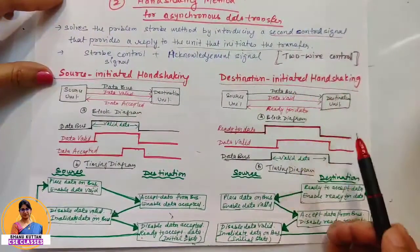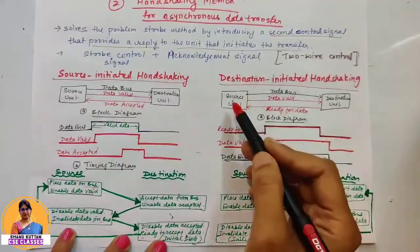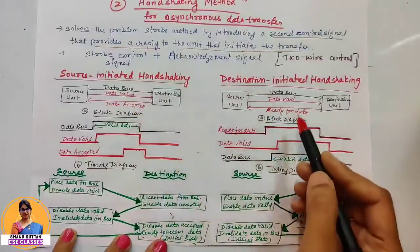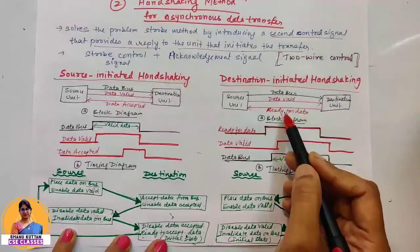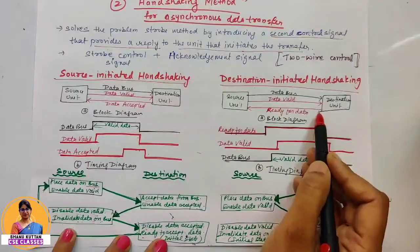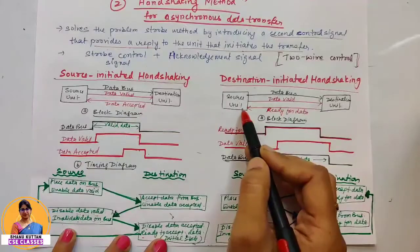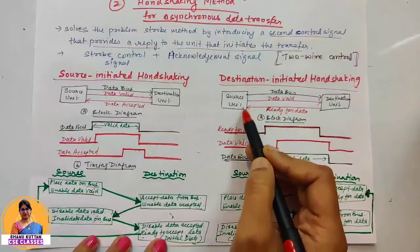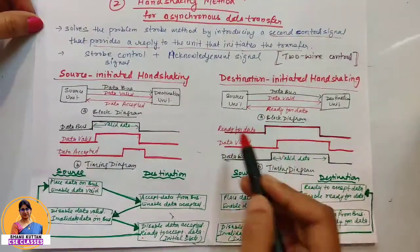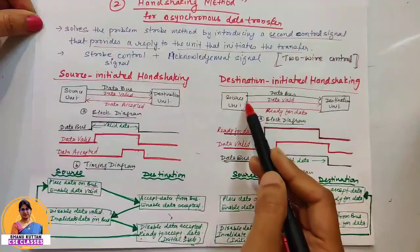The other type is destination initiated handshaking. In destination initiated data transfer, the control signals used are data valid and a signal called ready for data — because the destination initiates and tells the source that it is ready to accept data. The destination sends the ready for data signal to indicate the source can send data.